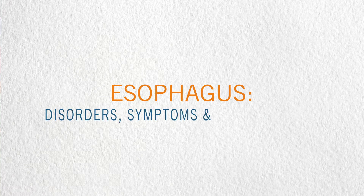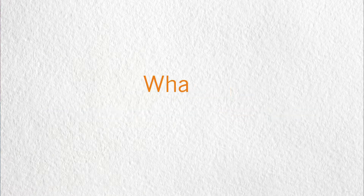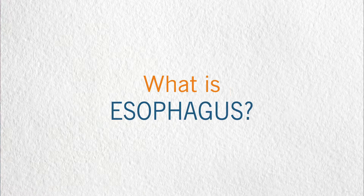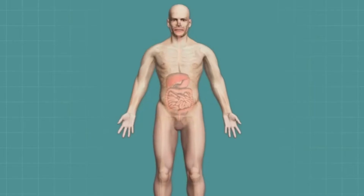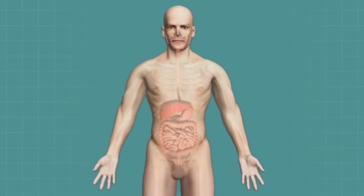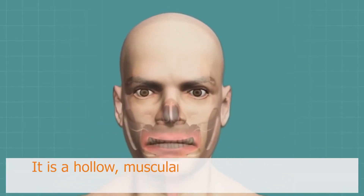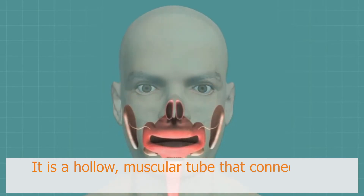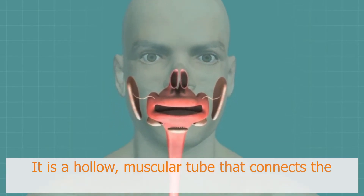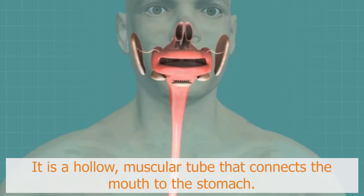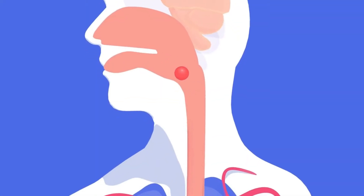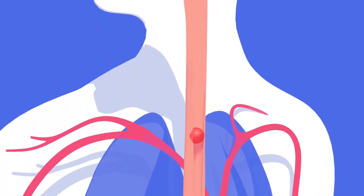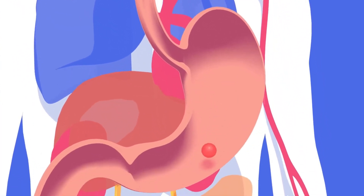Disorders, Symptoms and Complications. The esophagus is a hollow muscular tube that connects the mouth to the stomach. It is also known as the food pipe, and it carries food and liquid from the mouth to the stomach.